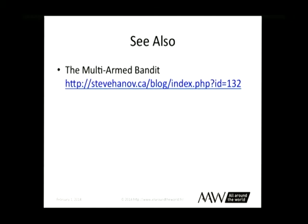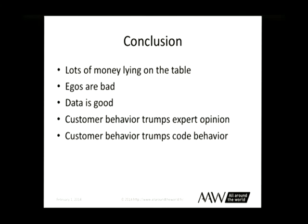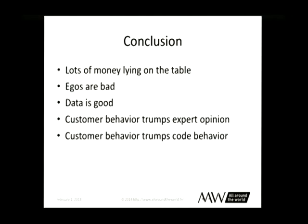You also want to look at something called the multi-armed bandit. Basically, the multi-armed bandit is kind of like A/B testing but it does all of it for you — you put all your variants into it and as it runs along it will automatically calculate what works best and automatically show that to users. Lots of money lying on the table. Ego's really bad, data's really good. Customer behavior trumps expert opinion — I don't care how good you are if customers don't respond, forget it. And customer behavior of course trumps code behavior: perfect code doesn't matter if customers don't use it.